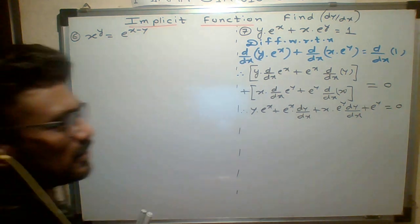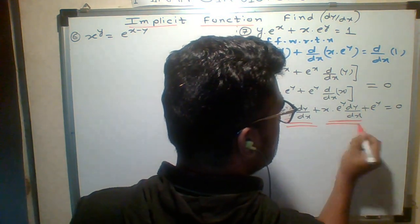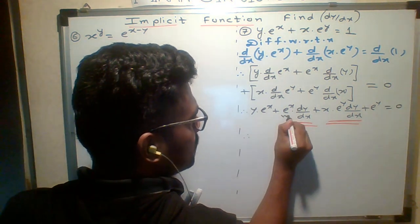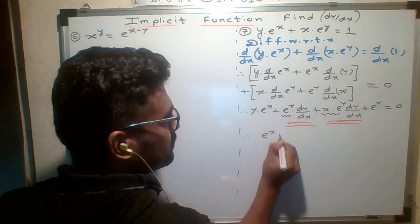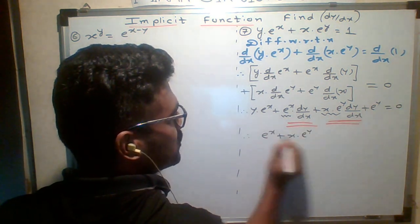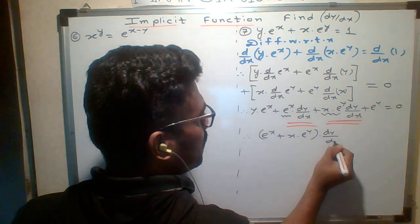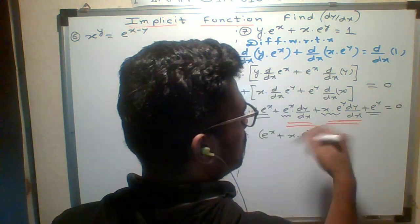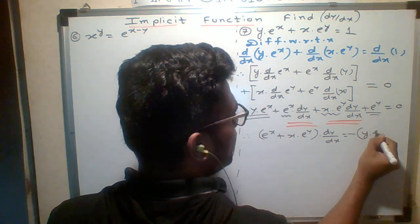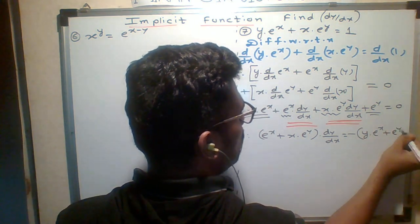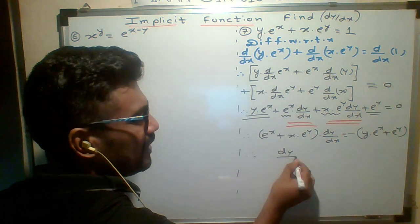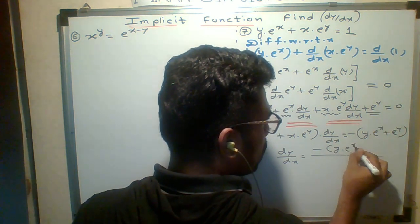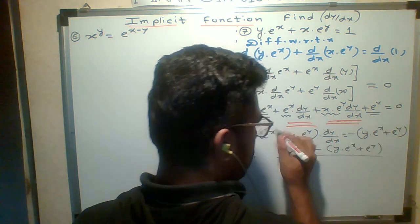Now we know that the term in which dy/dx is present, we will keep on the left hand side and take dy/dx common. So if I take dy/dx common, inside remains e^x plus x·e^y in bracket, and dy/dx outside. The term in which dy/dx is not present: minus y·e^x plus e^y. So dy/dx equals that numerator upon the whole denominator.